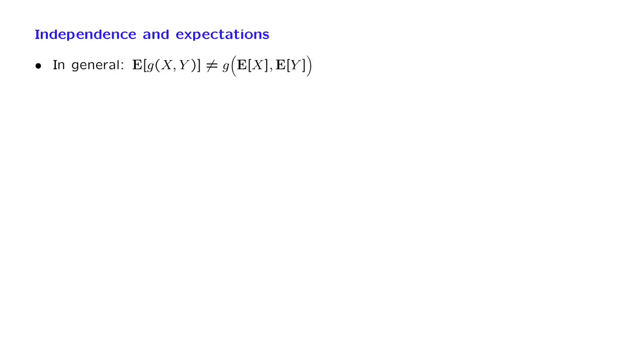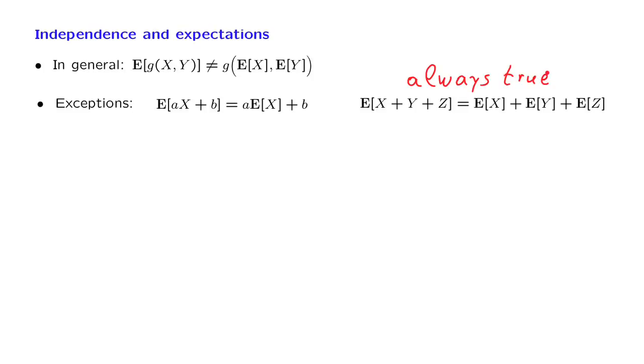We also know that there are some exceptions where we do get equality. This is the case where we are dealing with linear functions of one or more random variables. Note that this last property is always true and does not require any independence assumptions.